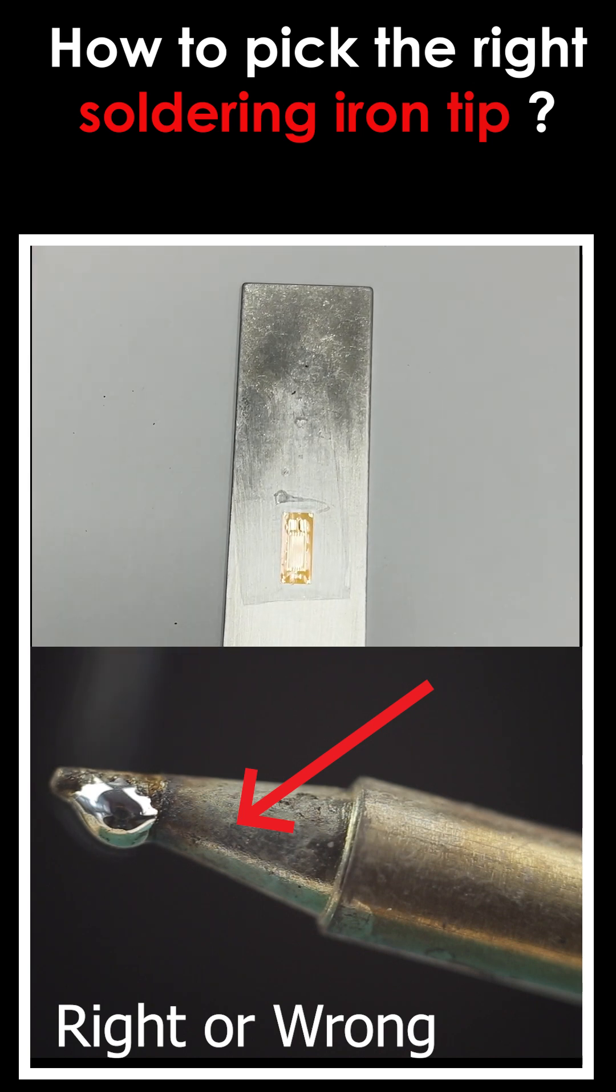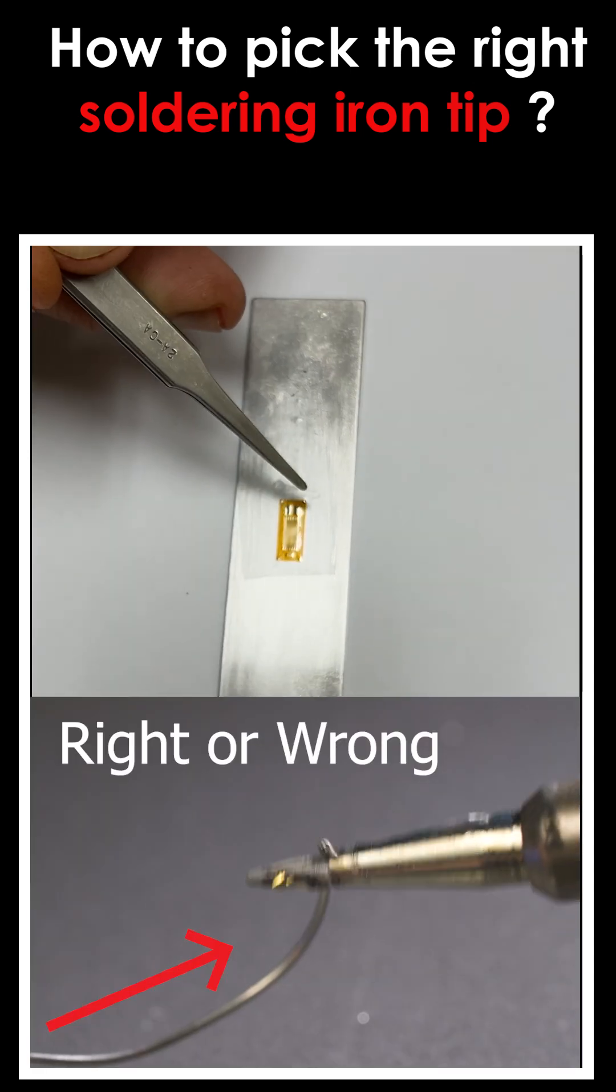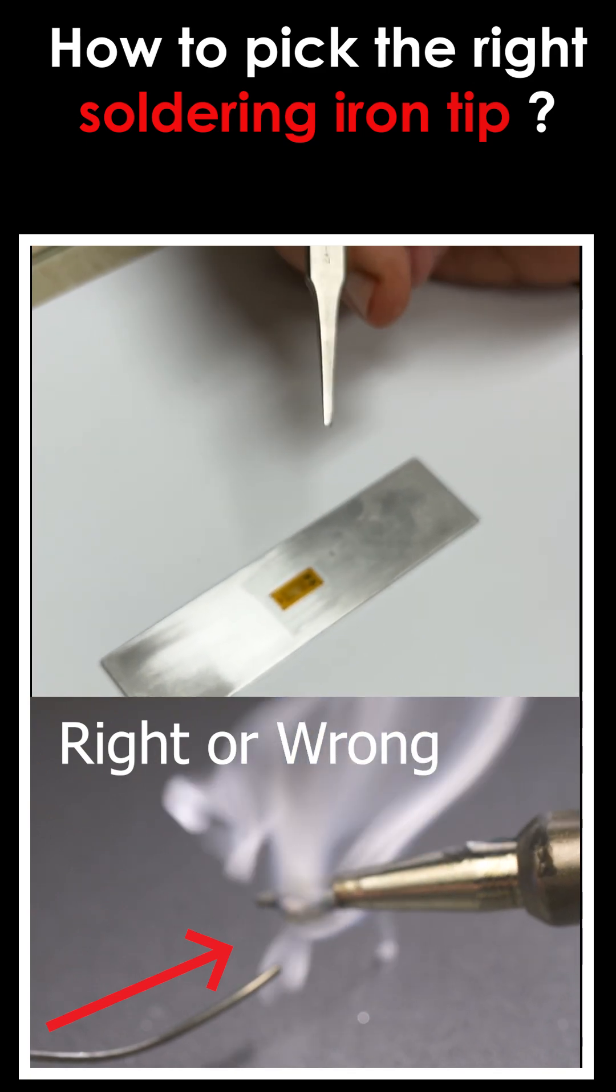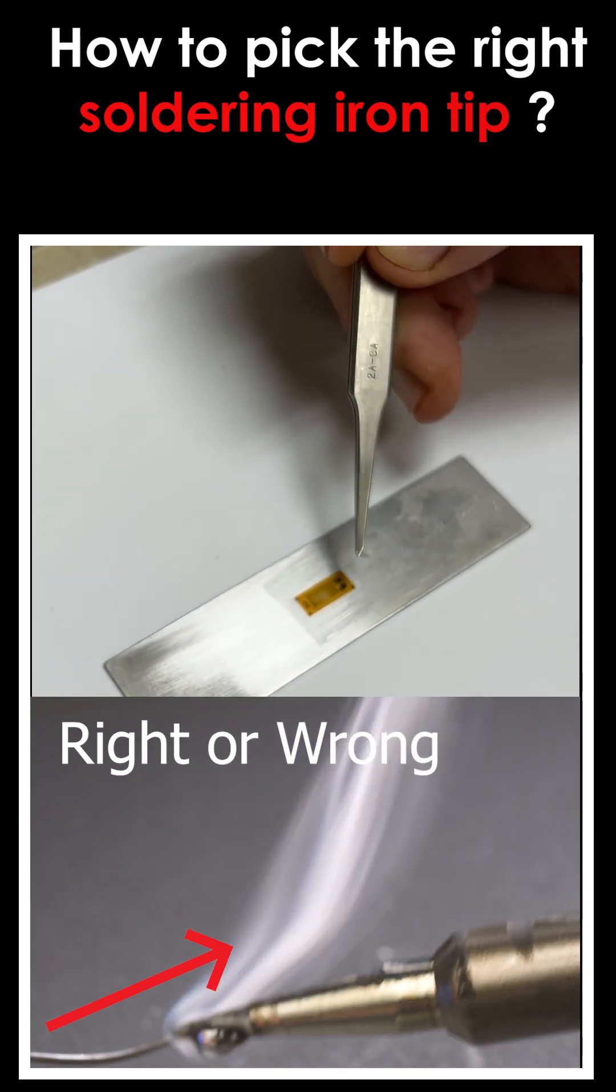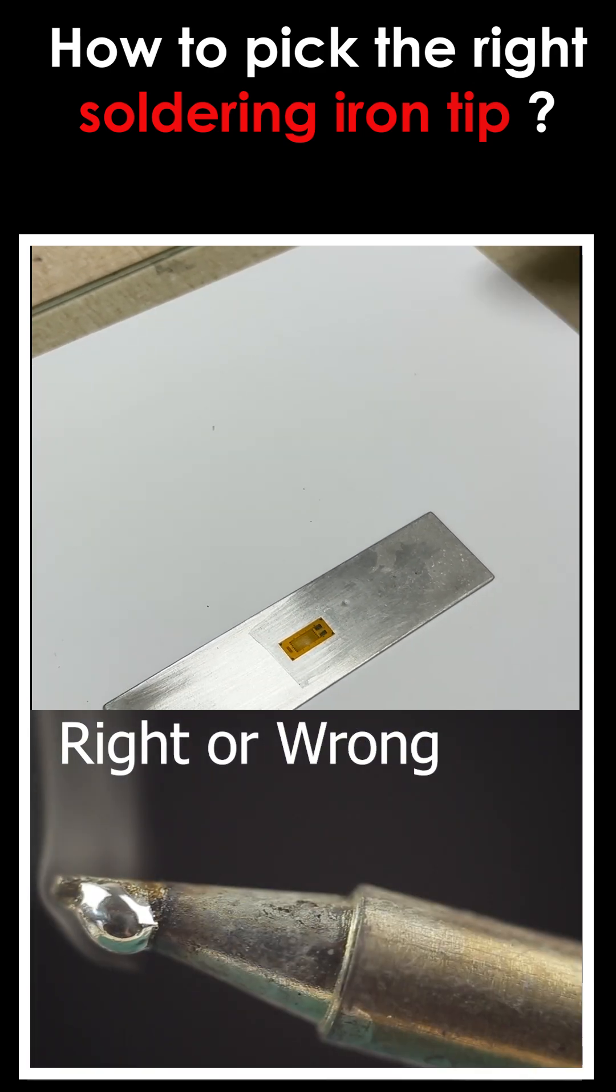So the point we want to make about strain gauge soldering is this foil, unlike printed circuit board soldering, where you solder into a thicker copper, this foil has no thermal mass. And let's take a look at how that influences tip selection.